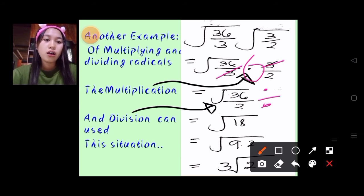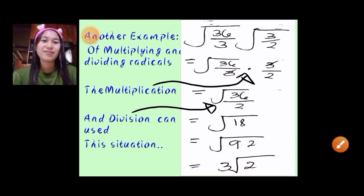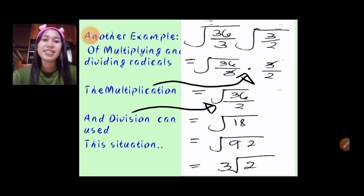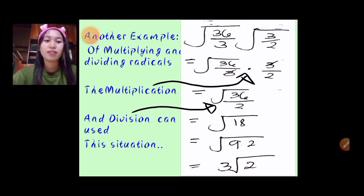9 is a perfect square, and the perfect square root of 9 is 3. So the answer is 3 square root of 2.